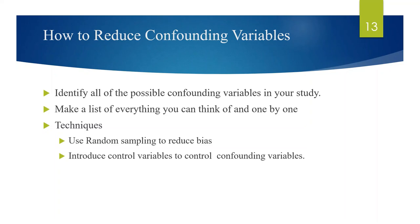So, make sure that you identify all the possible confounding variables in your study. Make a list of everything you can think of, one by one, and consider whether those items might influence the outcome. Usually, someone might have done a similar study before you, so check the academic databases for ideas. Once you have figured out the variables, use random sampling techniques to reduce bias and introduce control variables to control confounding variables. Today we discussed the types of variables in research studies. Thank you.